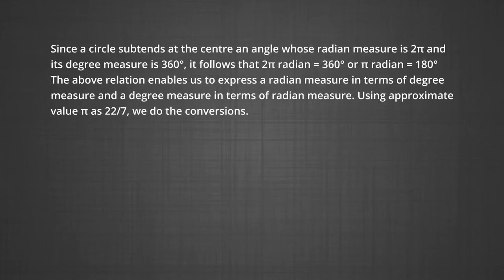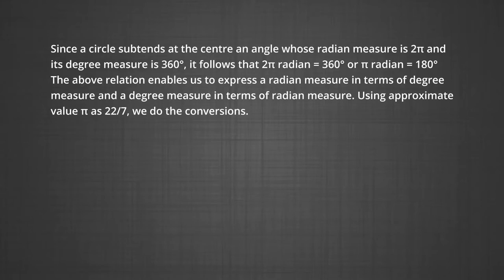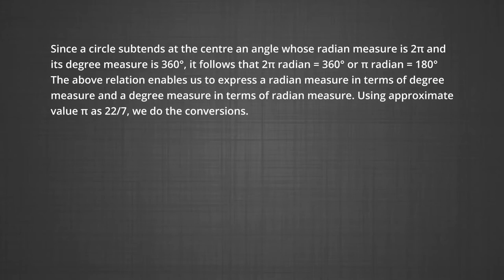Since a circle subtends at the centre an angle whose radian measure is 2π and its degree measure is 360 degrees, it follows that 2π radians is equal to 360 degrees, or π radians is equal to 180 degrees. This relation enables us to express a radian measure in terms of degree measure and also to convert degree measure in terms of radian measure. We are going to use the value of π as 22/7 as an approximation to do the conversions.